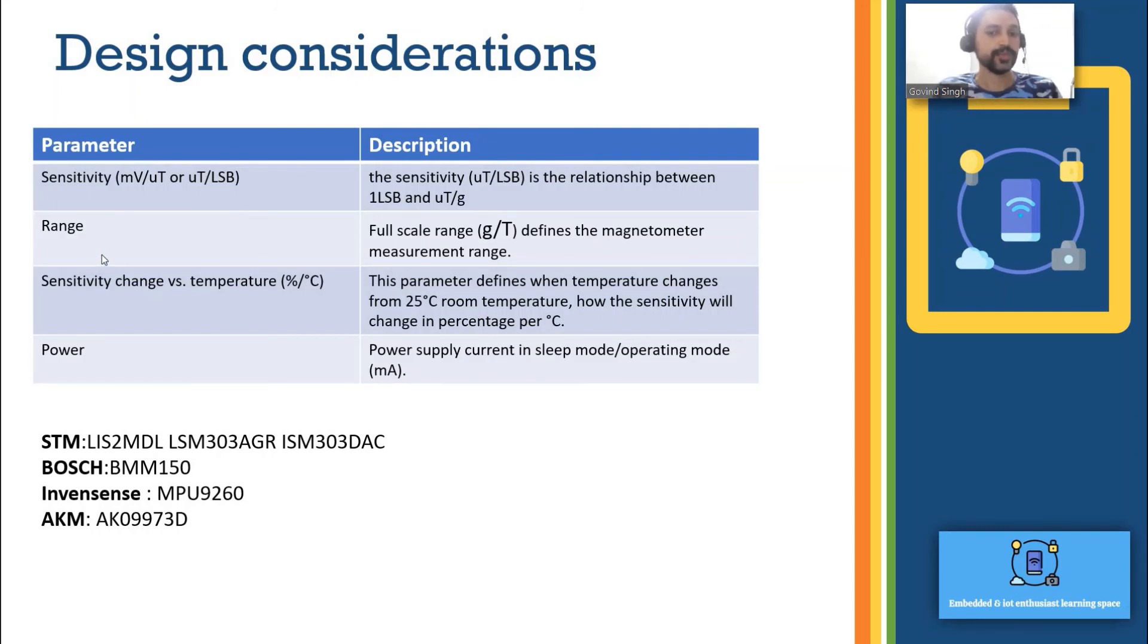The next thing is the range. What is the full scale range of the magnetometer in terms of gauss or tesla. Third thing is the sensitivity change with respect to temperature. It should not be very sensitive with respect to temperature.